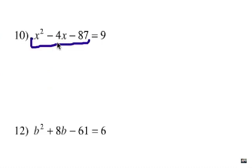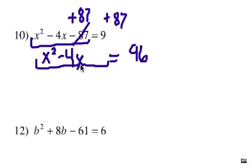X squared minus 4X minus 87 is not a perfect square trinomial. I have to get rid of negative 87, so I'm going to add 87 on both sides. That's my first step. Now remember to leave a space in here for our third term,